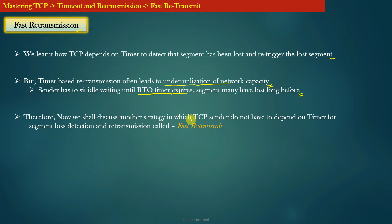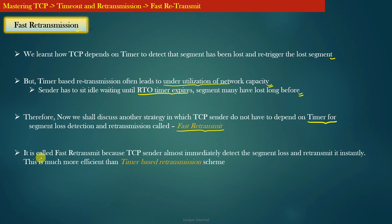We shall now discuss another strategy in which the TCP sender does not have to depend on a timer at all for segment loss detection and retransmission. This strategy is called fast retransmission, or fast retransmit. The TCP sender almost immediately detects the segment loss and retransmits it instantly, which is much more efficient than timer-based retransmission.